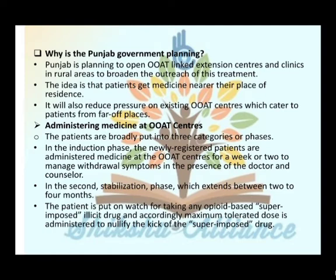In the induction phase, newly registered patients are administered medicine at the OOAT center for a week or two, to manage withdrawal symptoms in the presence of a doctor and counselor. In the stabilization phase, which extends from two to four months, patients are watched to ensure they are not taking any illicit opioid-based drugs, and accordingly the maximum tolerated dose is administered to nullify the effect of superimposed illicit drugs.